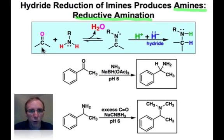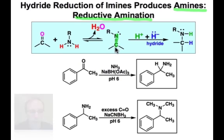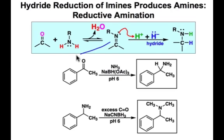We know that in the forward direction, the carbonyl derivative plus an amine will lose water to make a carbon-nitrogen double bond of an imine. At a pH of about 6, the carbon-nitrogen double bond can become protonated, and that will make an aminium cation.